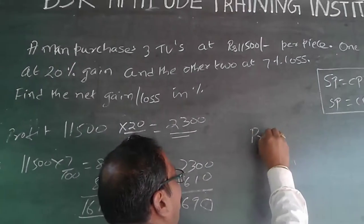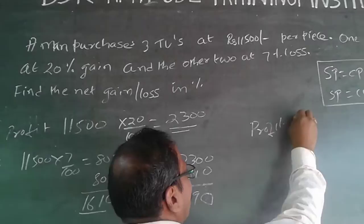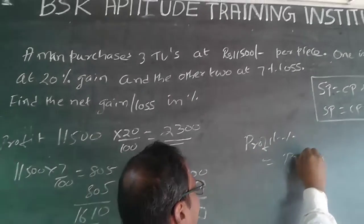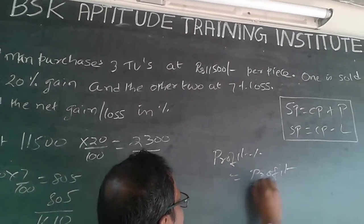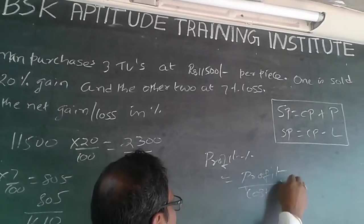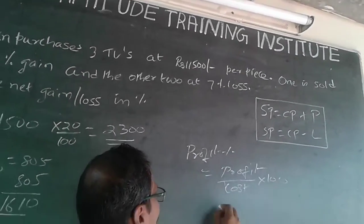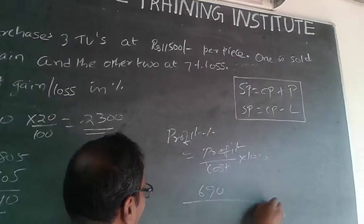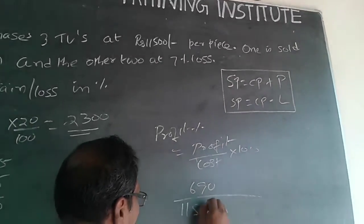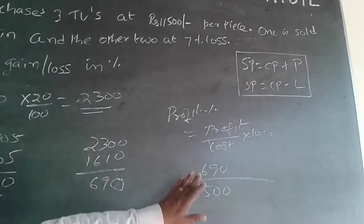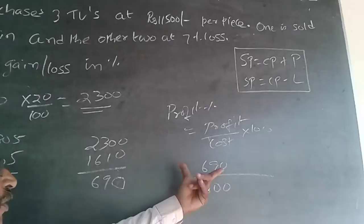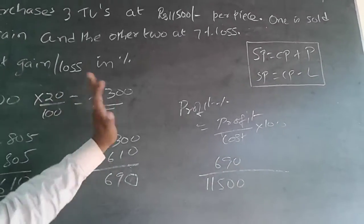Percentage is always, profit percentage will be profit divided by cost, profit divided by cost into 100. So, profit is 690 divided by cost, 11,500. So, this is the mistake which many of my students have done. This profit value is for all the three TVs put together.